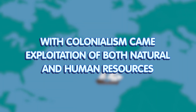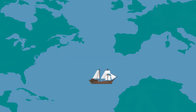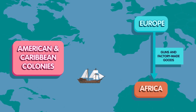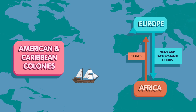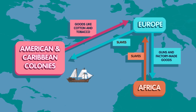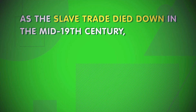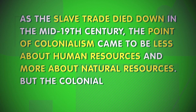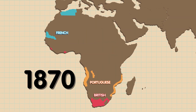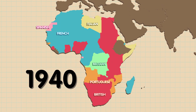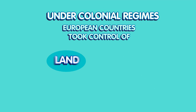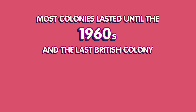With colonialism came exploitation of both natural and human resources. The transatlantic slave trade followed a triangular route between Africa, the American and Caribbean colonies, and Europe. Guns and factory-made goods were sent to Africa in exchange for slaves, who were sent to the colonies to produce goods like cotton and tobacco, which were then sent back to Europe. As the slave trade died down in the mid-19th century, the point of colonialism came to be less about human resources and more about natural resources. In 1870, only 10% of Africa was colonized. By 1940, only Ethiopia and Liberia were not colonized. Under colonial regimes, European countries took control of land and raw materials to funnel wealth back to the West. Most colonies lasted until the 1960s, and the last British colony, Hong Kong, was finally granted independence in 1997.